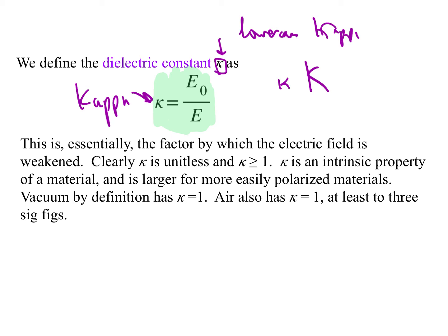By definition, vacuum has kappa equal to one. And we usually take that air has kappa equal to one, at least out to three decimal places. You have to go to the fourth decimal place to see a kappa different than one for air.